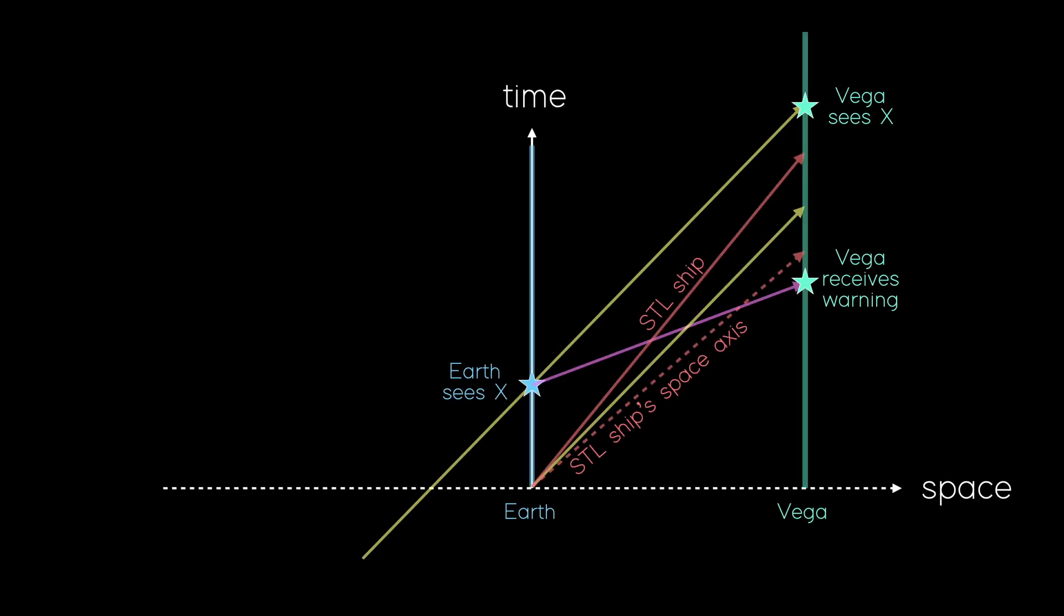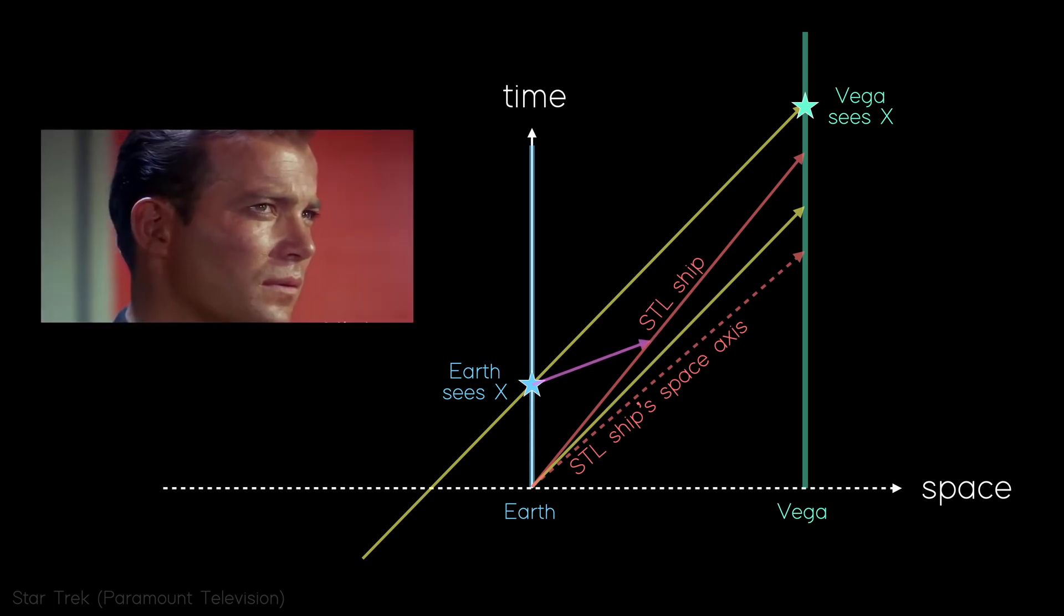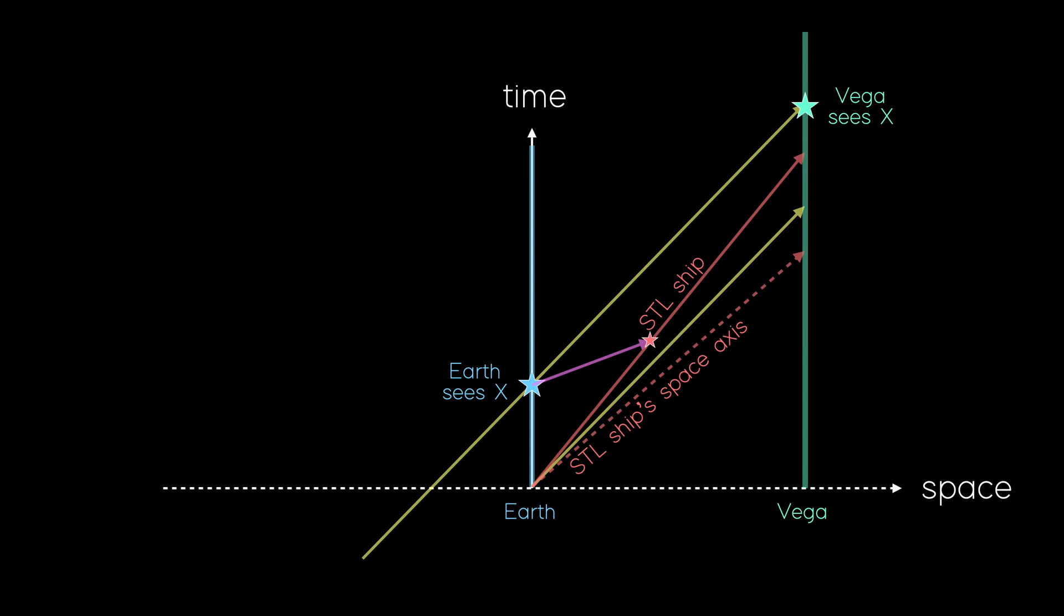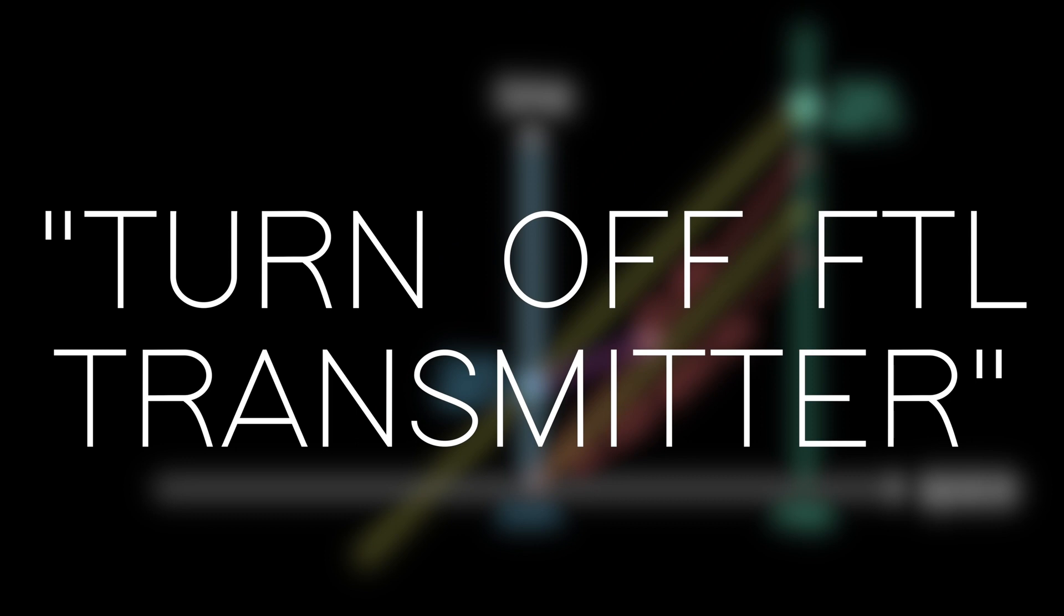To see this, let's modify the scenario so that the crew are no longer mere observers, but can actually intervene. Let's modify the FTL worldline just a little. Instead of being sent to Vega, it is intercepted by the crew of the STL ship. So they would receive the message here. After receiving the message, they decide to send a reply back to Earth using an FTL transmitter that they have on board their ship. For a bit of perverse fun, let's imagine that they send a message back to Earth saying, turn off FTL transmitter.